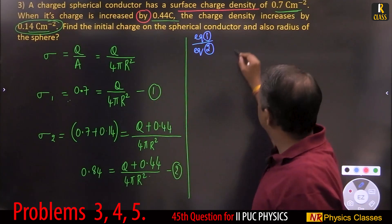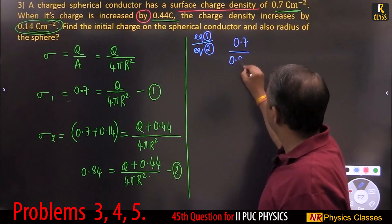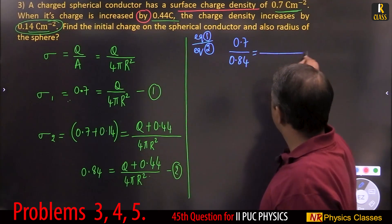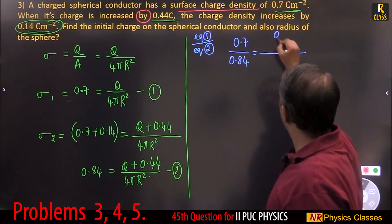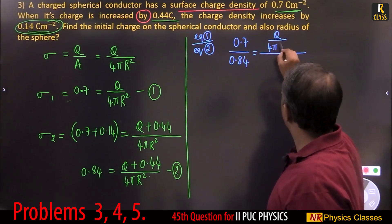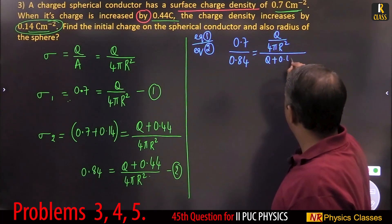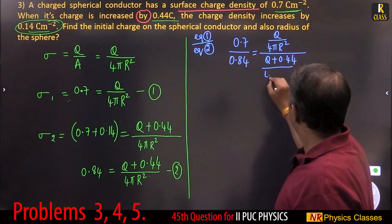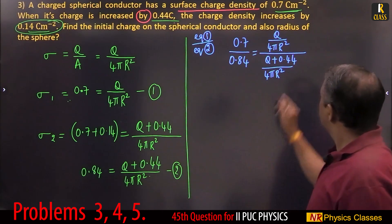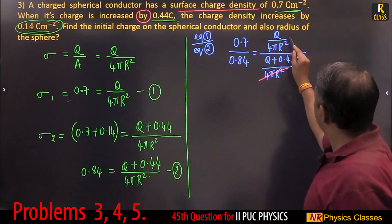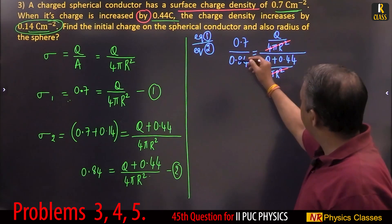Equation 1 is 0.7 and equation 2 is 0.84. Equation 1 gives Q divided by 4 pi r squared; equation 2 gives Q plus 0.44 divided by 4 pi r squared. The 4 pi r squared cancels, giving 0.7 divided by 0.84.